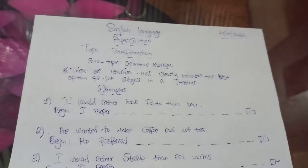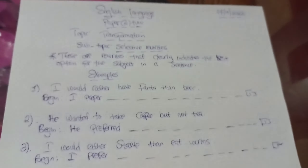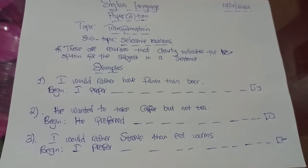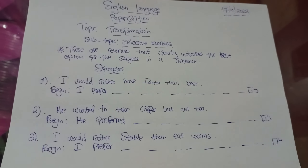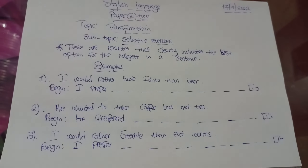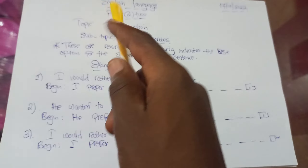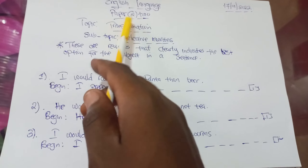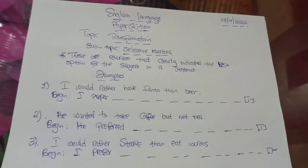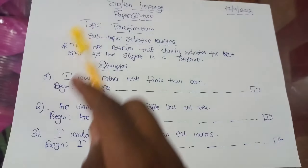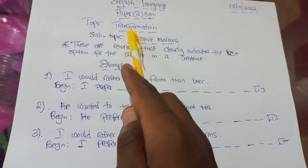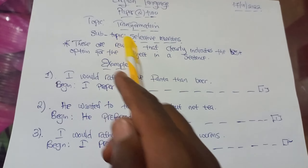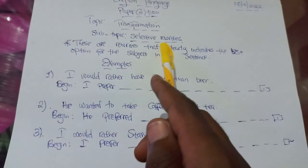Hello. Good evening. I hope you are doing good. For this particular evening, we are simply going to discuss English Language Paper 2, where we are going to talk about transformation, and our subtopic is selective rewrites.